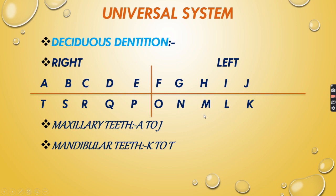For the mandibular right quadrant, the letters are P, Q, R, S, T. So maxillary teeth run A to J, and mandibular teeth start with K and end with T — always start from K and end with T. This is the complete Universal tooth numbering for deciduous dentition.